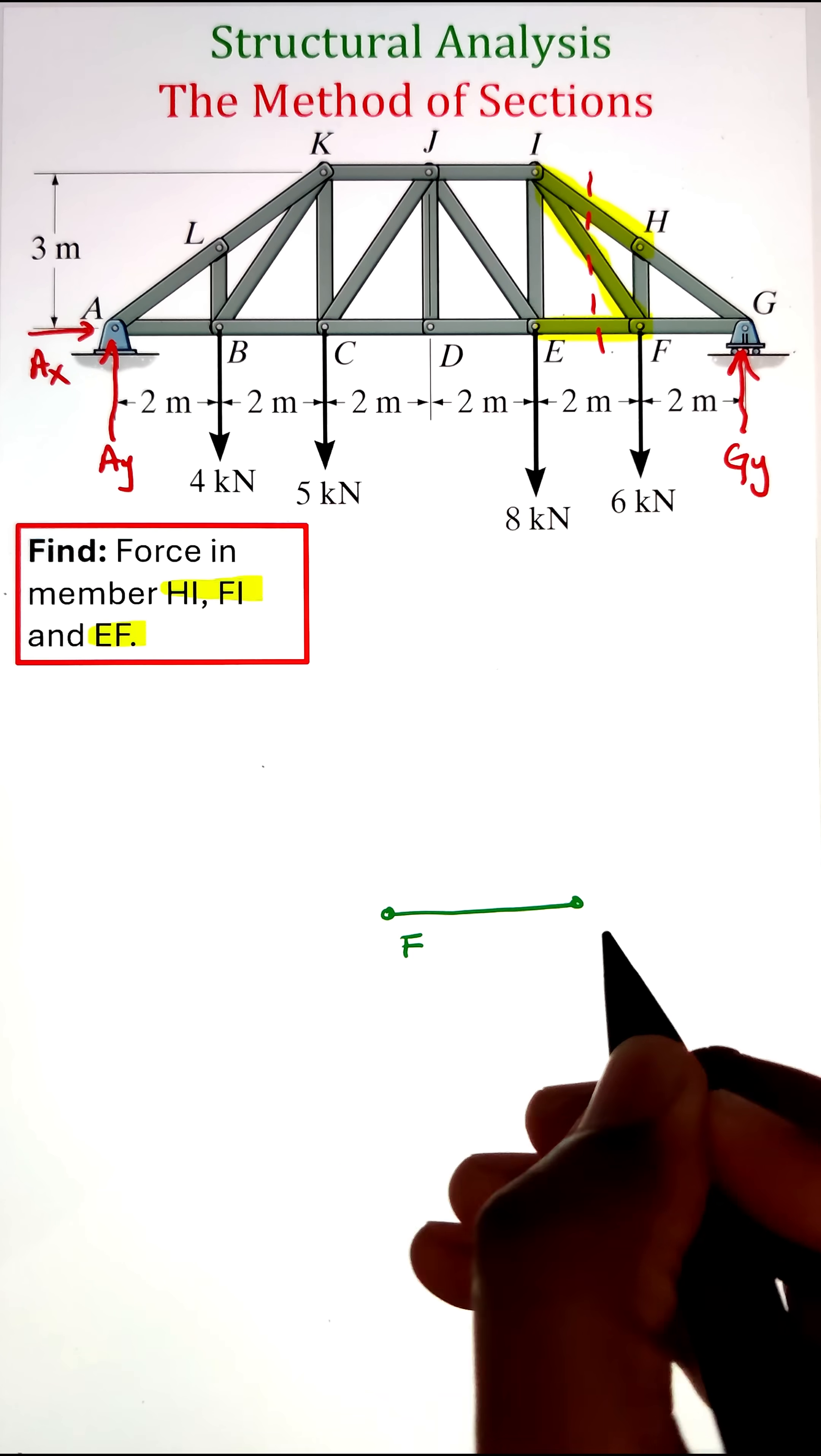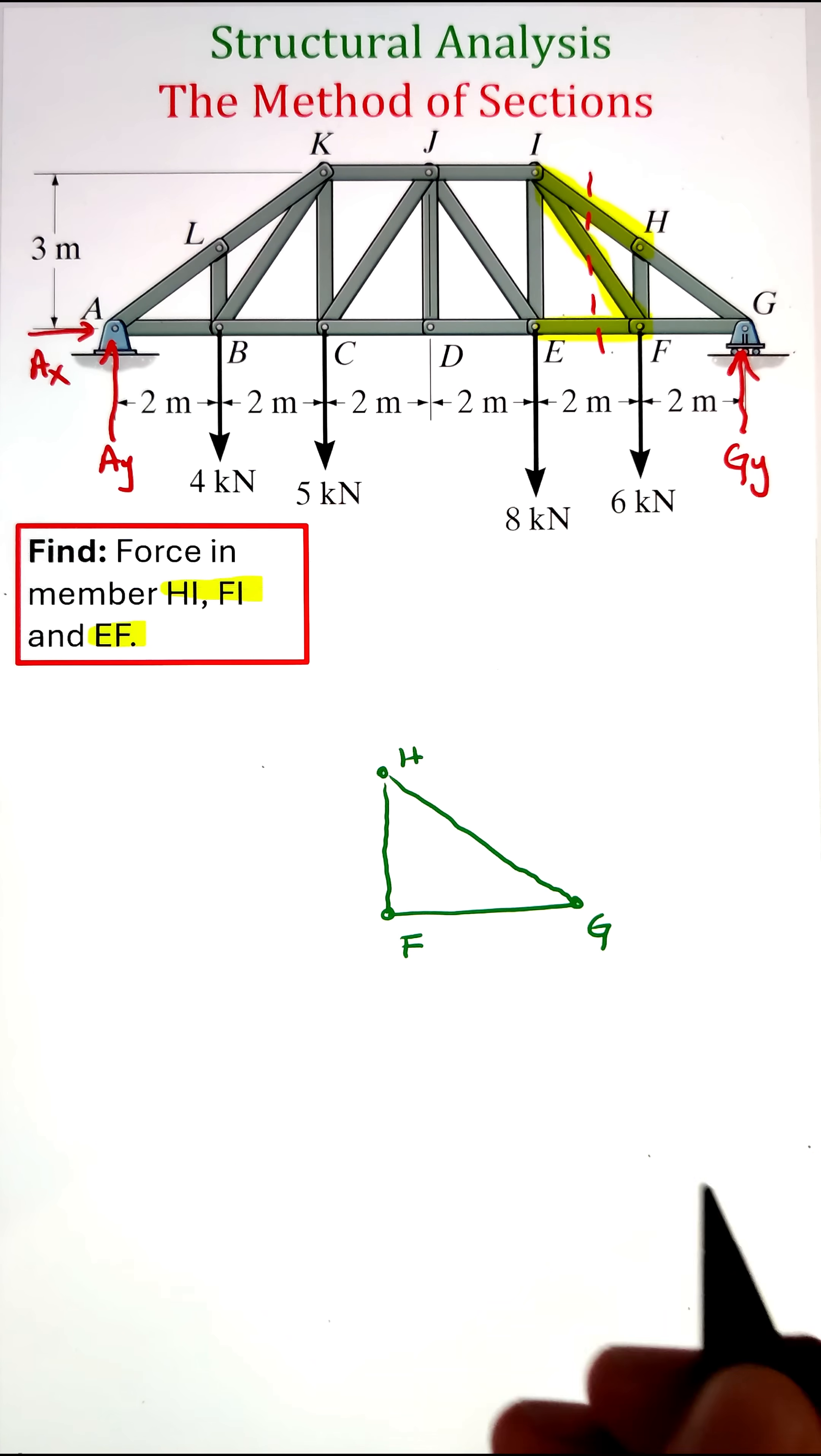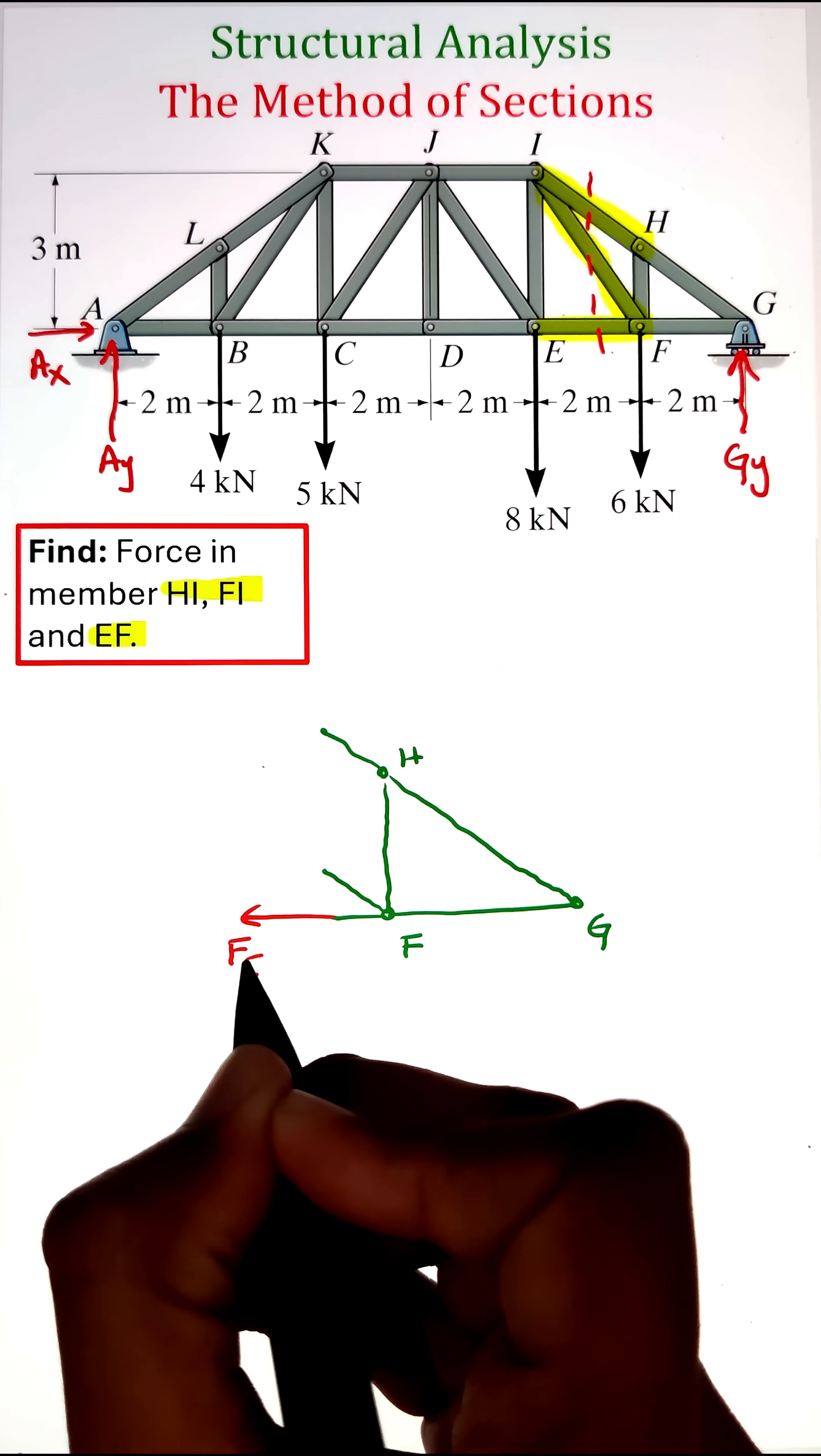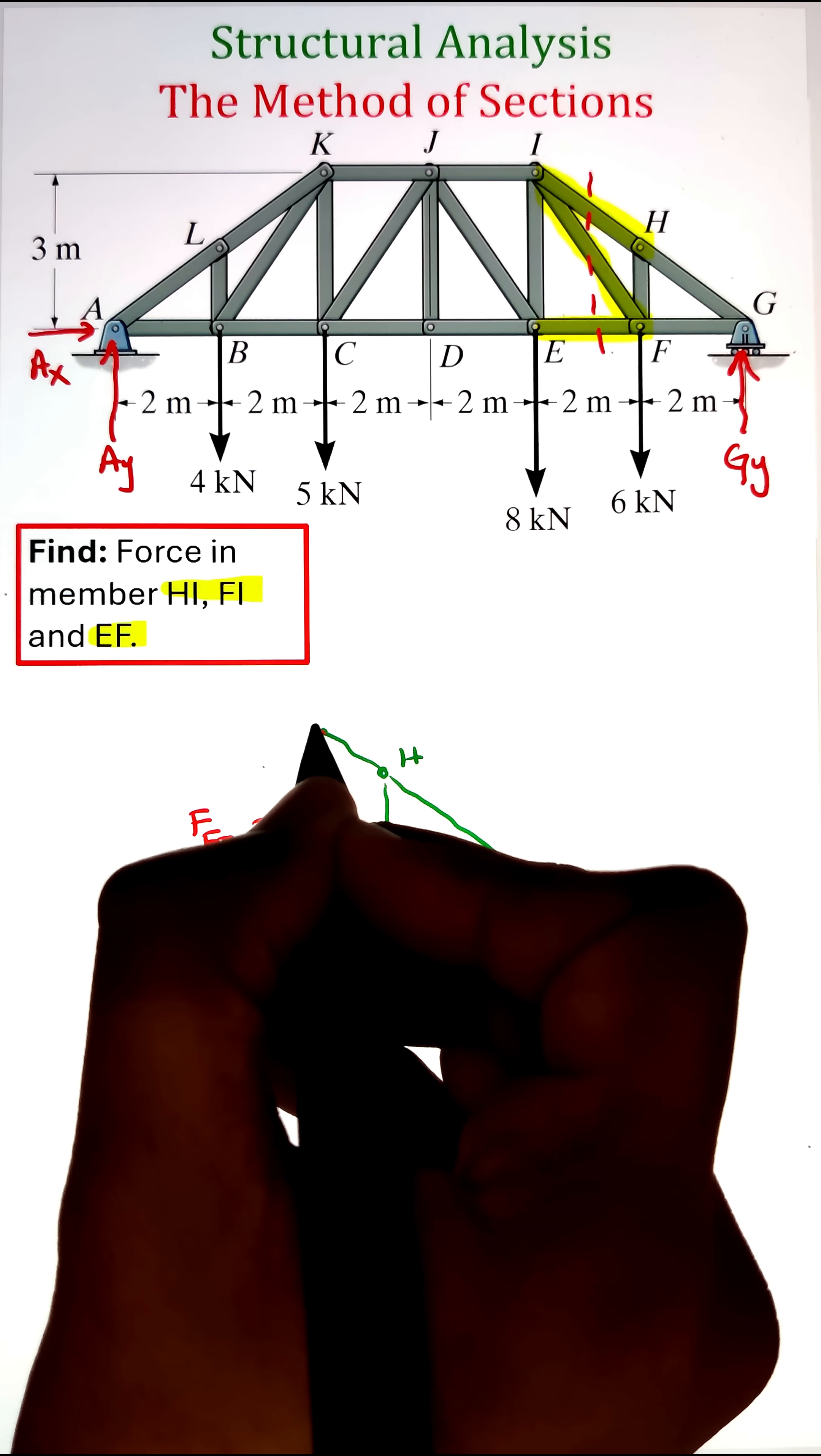Since it is a truss with two-force members, we will only have forces acting along the axis of these members as FHI, FFI, and FEF. Other than these internal forces, we have one external force of 6 kilonewtons applied at point F and a support reaction at G of 12.66 kilonewtons.